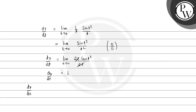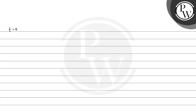Now dy/dx, which is the slope of the tangent, equals (dy/dt) / (dx/dt) = 1 / 2. So the slope m₁ = 1/2. At t = 0, x = 0 and y = 0, so our point is (0, 0).